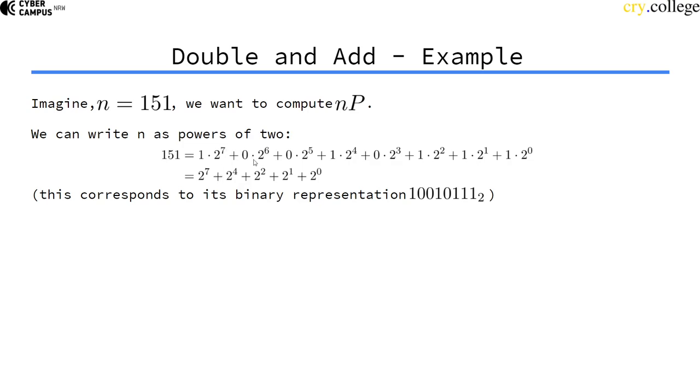Then we can throw out all the zeros and have only powers of 2 that make up n. We can actually just continuously double the point P and then add the doublings onto the result.